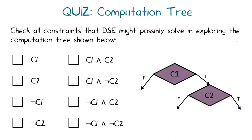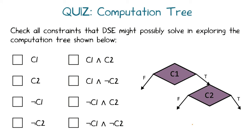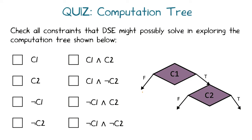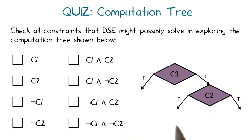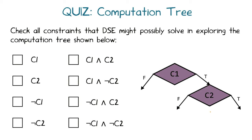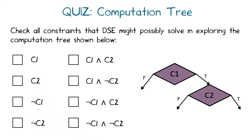Now consider this quiz. We are given a computation tree where the program starts by checking condition c1. If false, the program terminates; if true, the program checks condition c2, and regardless of how c2 evaluates, the program terminates. Which of these 8 constraints might DSE possibly solve? The candidates are: c1, c2, not c1, not c2, c1 and c2, c1 and not c2, not c1 and c2, and not c1 and not c2.